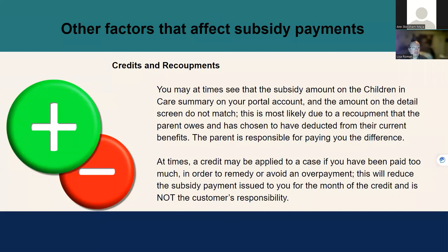Other factors can also affect subsidy payments. You might see credits or recoupments on a case. At times the subsidy amount shown on the children-in-care summary in your portal and the amount on the detail screen may not match — this is most likely due to a recoupment the parent owes, deducted from their current benefits. The parent is then responsible for paying you the difference. A credit may also be applied if you've been paid too much, reducing the subsidy payment issued to you for that month.